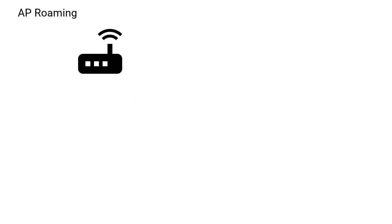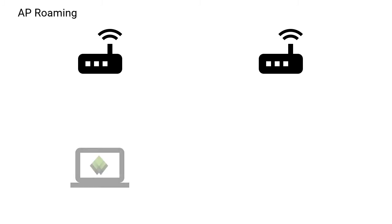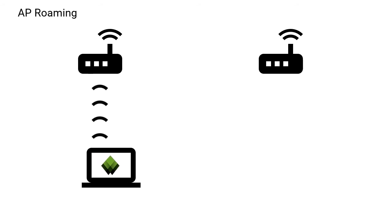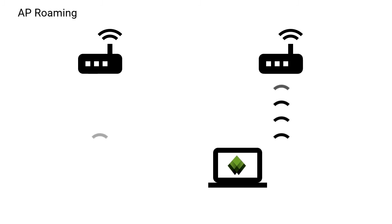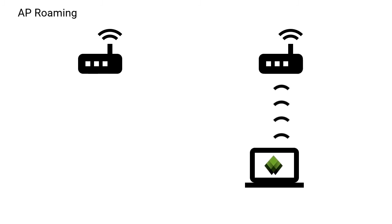During an active site survey, roaming data is also analyzed. For extensive areas, several access points are usually deployed to provide a reliable Wi-Fi connection from every spot. Client devices need to connect to different access points while moving through the covered facilities in order to ensure a stable connection and avoid interruptions. This ability is known as roaming. Analyzing roaming data helps identify which access point a device is connected to depending on its location at any given time.